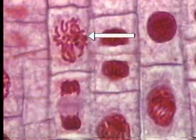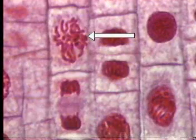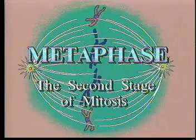In normal cells, all the complicated events that define prophase take between 30 and 60 minutes to complete, finally ending when the next stage of mitosis, called metaphase, is reached.